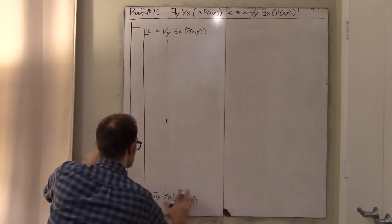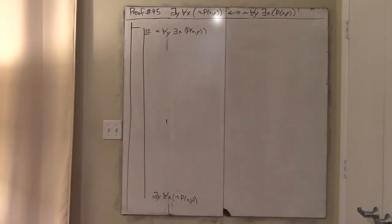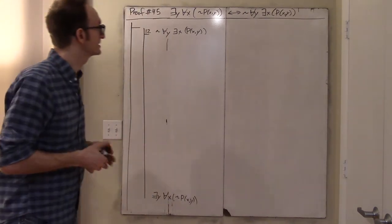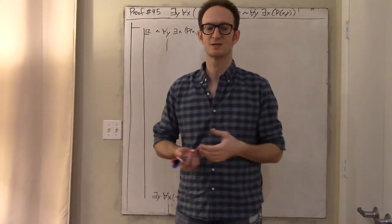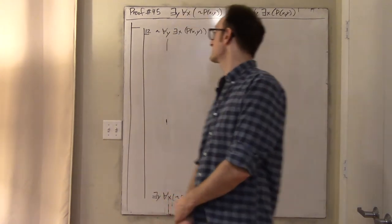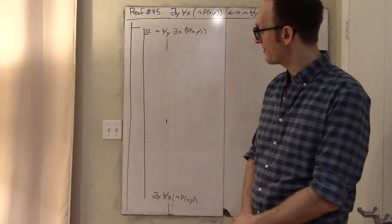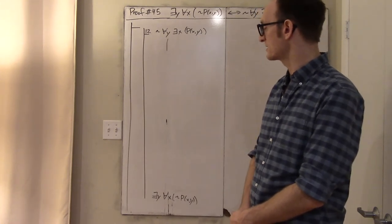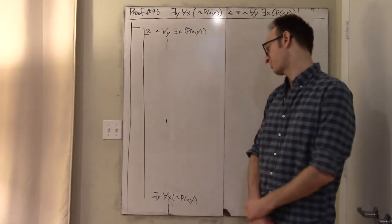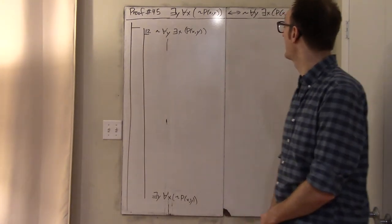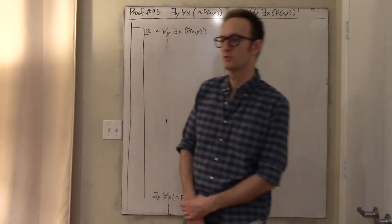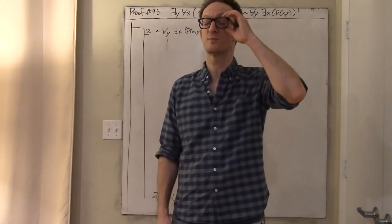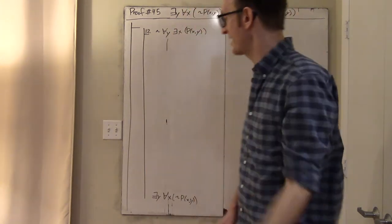Some level of experience and comfort with doing a million of these proofs is helpful here. There's nothing I can do with line 12 — it's a negation, and you can't do anything with a negation. The destiny of a negation is to be used in a proof by contradiction. Maybe a better way of thinking about it: my goal is to prove there exists some person y with the property of no one punching them. I need to prove there's this unpunched person out there — and of course I'm not going to be able to produce a particular person who is unpunched.